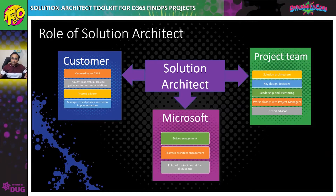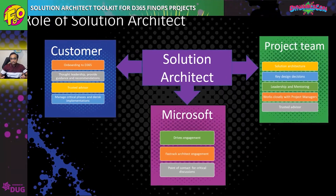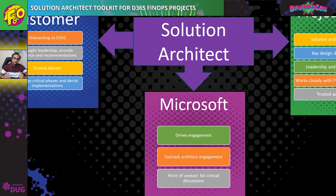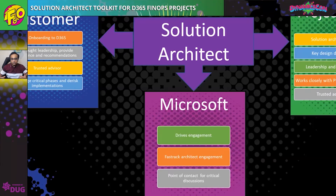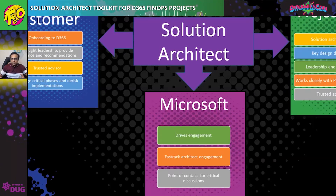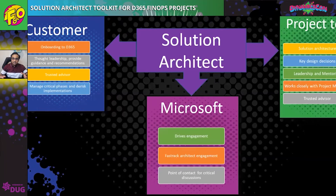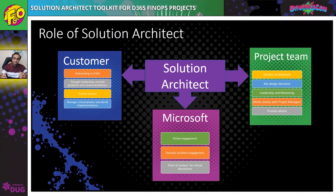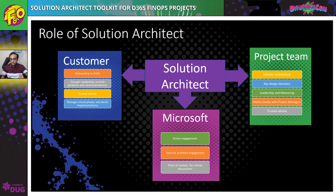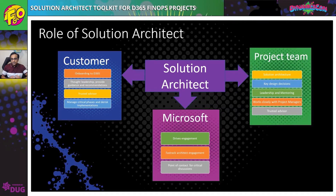The solution architect is also the key point of contact for Microsoft, because the Microsoft FastTrack architects need someone to discuss how the project is going, what key milestones are coming up, and whether there are any risk areas. The solution architect represents the whole project to Microsoft FastTrack architects and plays a very crucial role in that engagement.